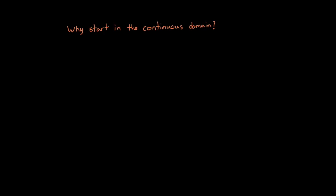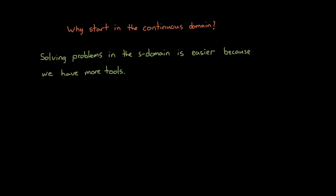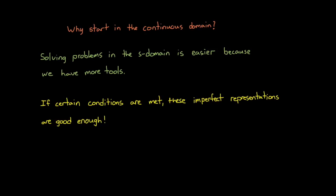I want to end this video by quickly explaining why we learn and talk about controllers in the continuous domain first. Why don't we build and tune our PID controller in the discrete domain from the beginning? The answer is the same reason we use linear models to approximate non-linear systems: solving problems in the S-domain is easier, and we have a lot more tools at our disposal for the continuous domain, just as we have more tools for linear systems over non-linear systems. In addition, often the plant being controlled is itself continuous, so modeling both the plant and the controller in the same continuous domain makes the problem simpler. And as long as certain conditions are met — like a fast enough sample time — these imperfect representations are still good enough to get the job done.